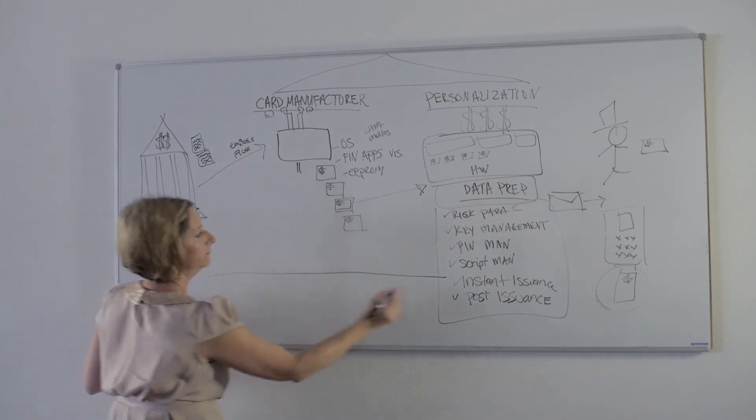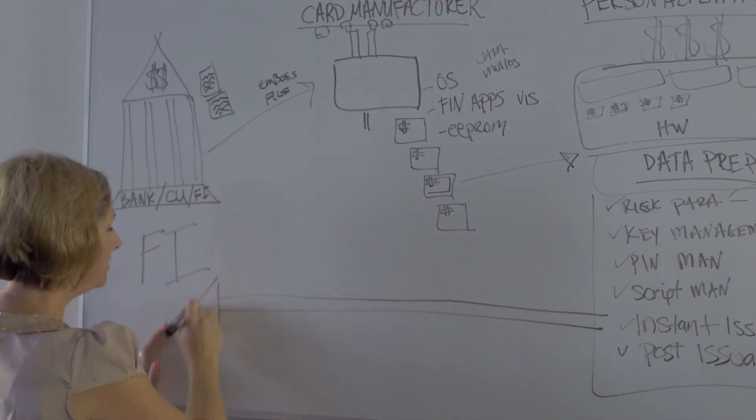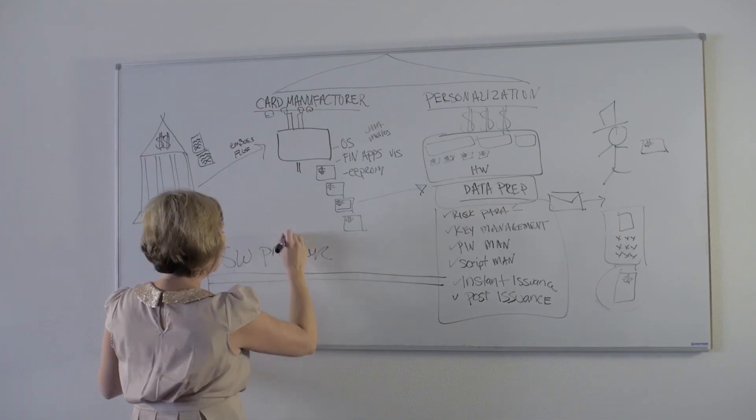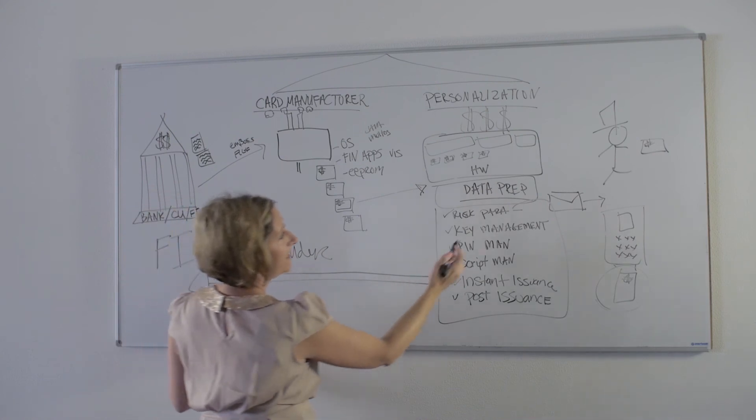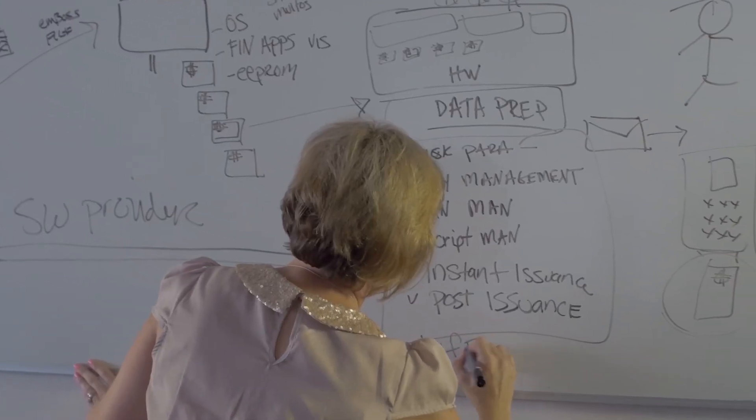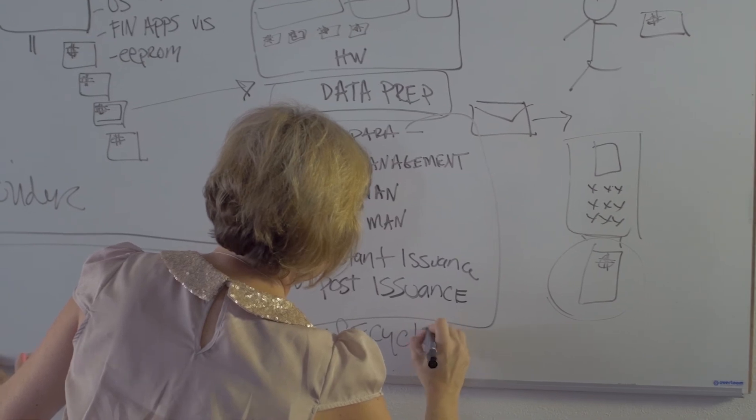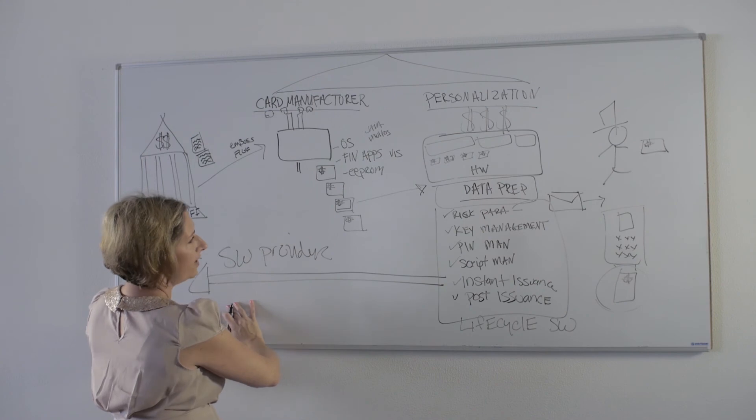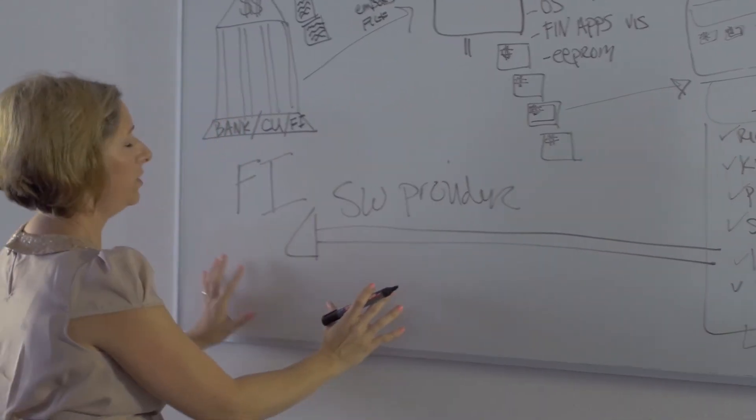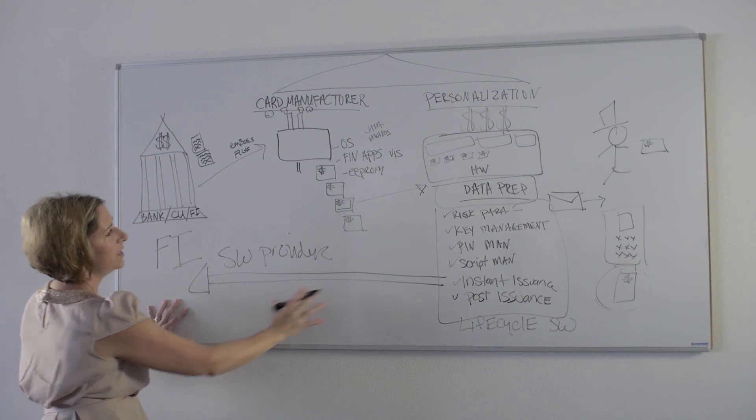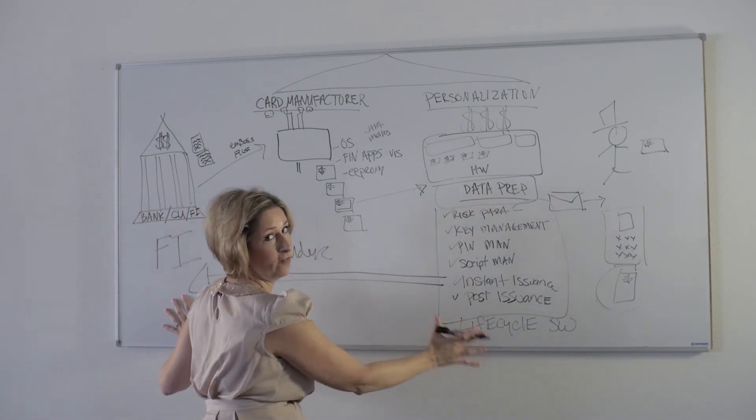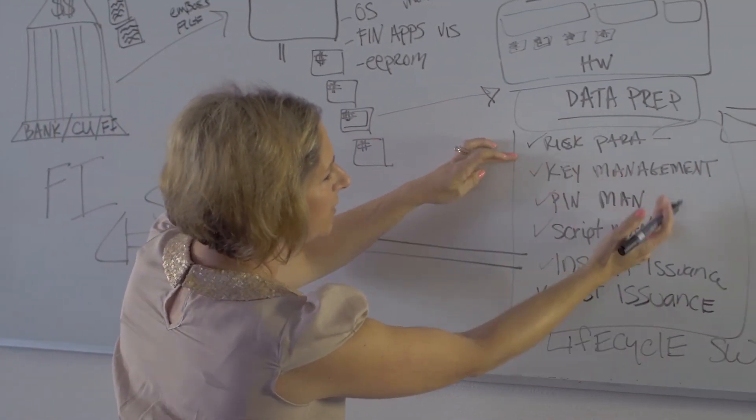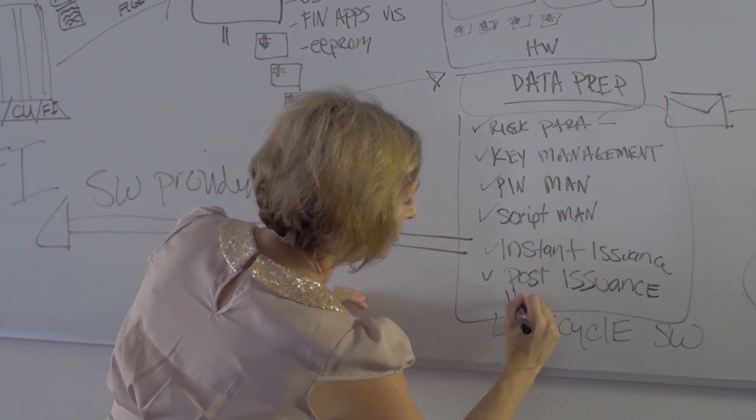This is what Bell ID does. Bell ID is a software provider that has created lifecycle management software to manage the profiles of their EMV cards. You can imagine the huge business case behind managing the most expensive part of an EMV implementation. At the end of the day, the data prep and the lifecycle management of all these deliverables, and even instant issuance...